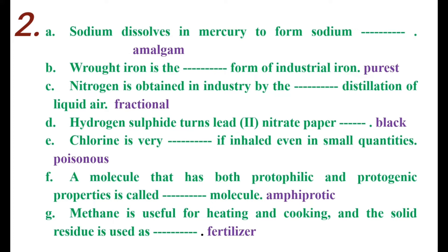Number B. Wrought iron is the purest form of industrial iron.